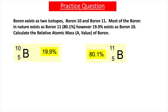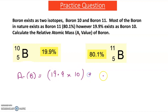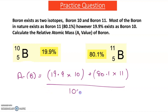Now let's test your understanding with a practice question. Read through the question, pause the video, have a go at it, and then we'll go through the answer. In this question, you're asked to work out the AR value for boron. 19.9% of the boron that exists has a mass number equal to 10, and 80.1% has a mass number equal to 11. To work out the AR value, we calculate the average: it's 19.9 times 10, added to 80.1 times 11, and then we divide by 100. So that gives us an AR value equal to 10.80.